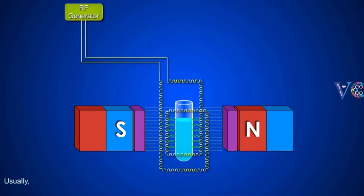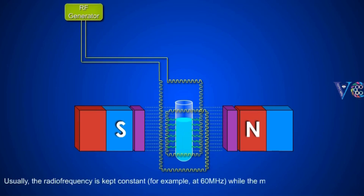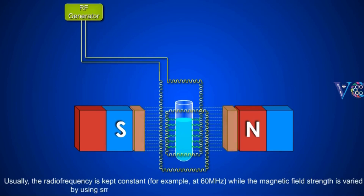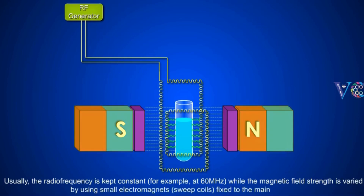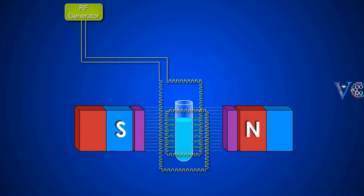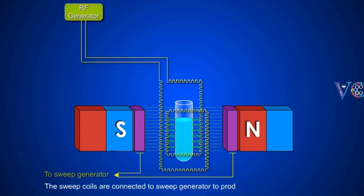Usually, the radio frequency is kept constant — for example, at 60 MHz — while the magnetic field strength is varied by using small electromagnets fixed to the main magnet. The sweep coils are connected to a sweep generator to produce a varying magnetic field.